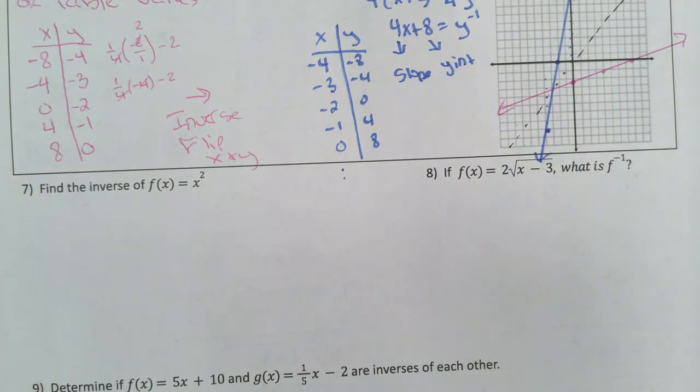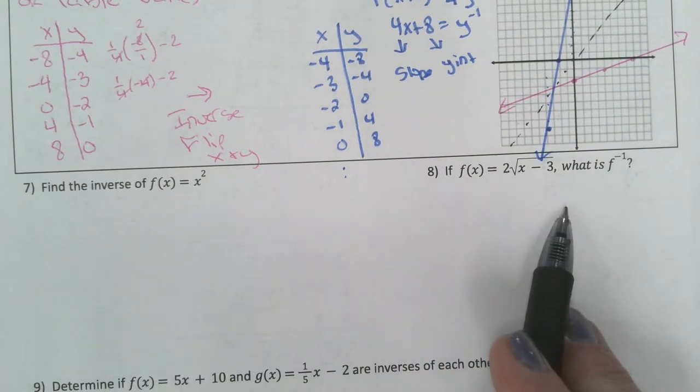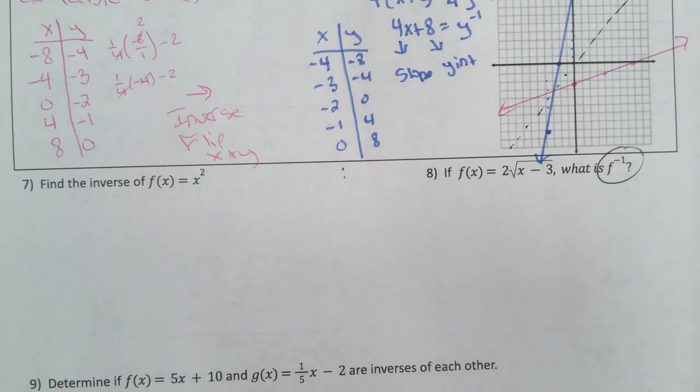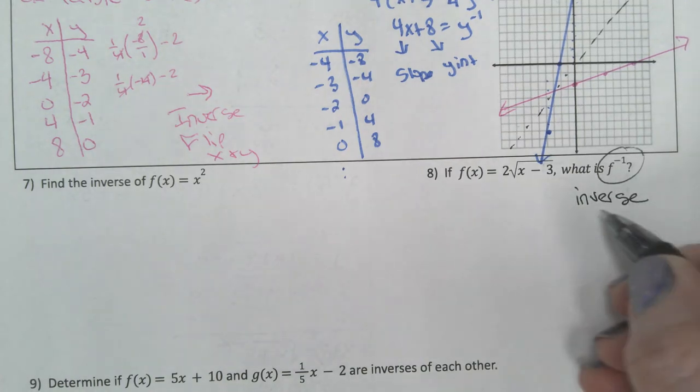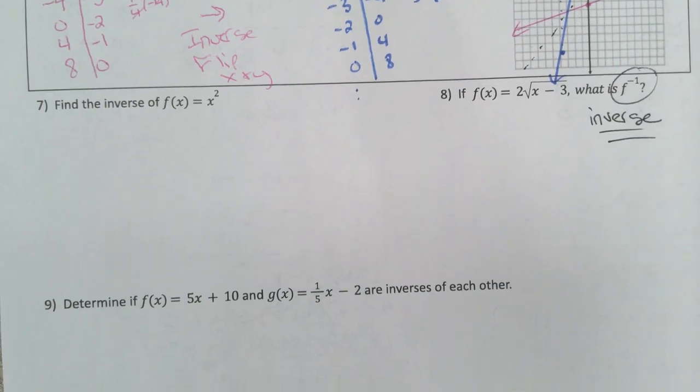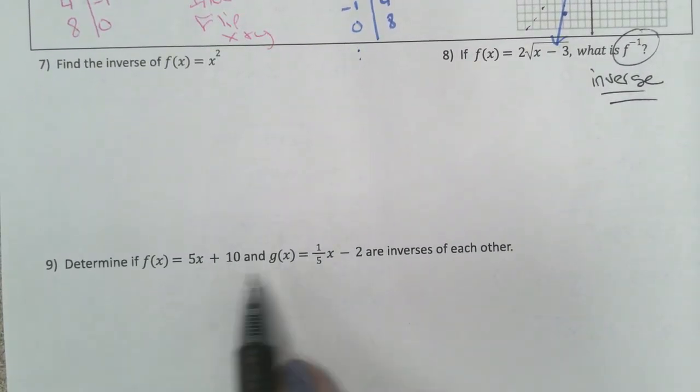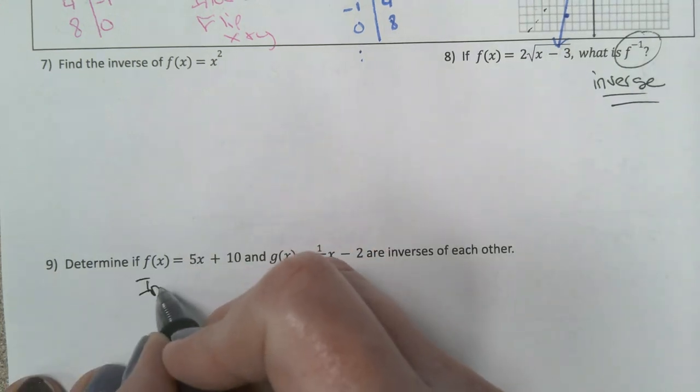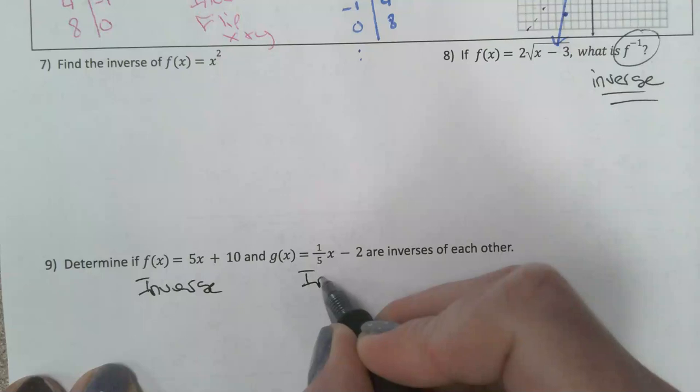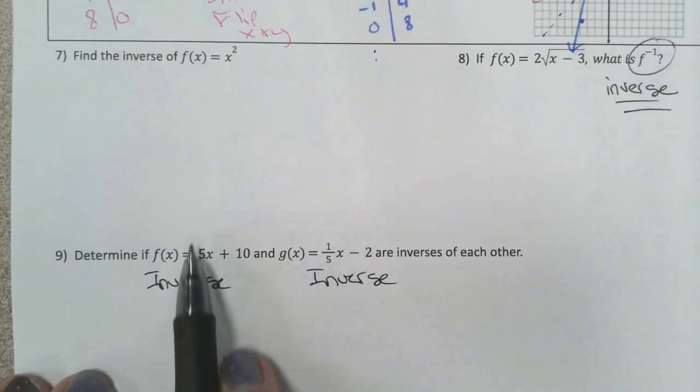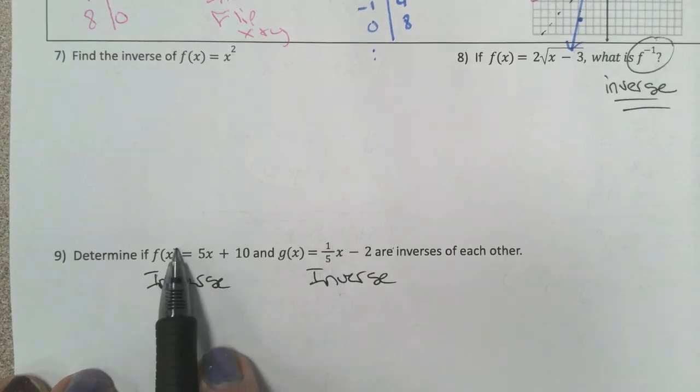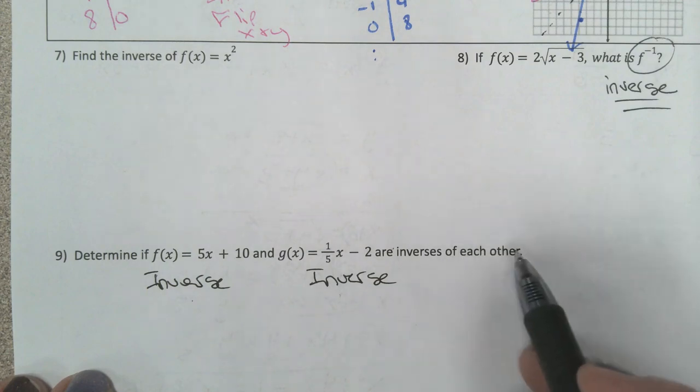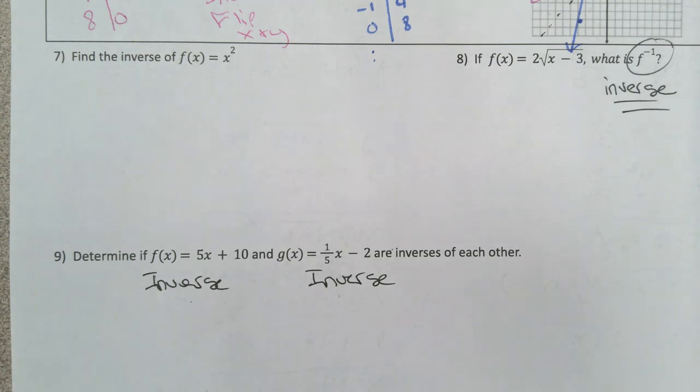Problems 7 and 8 are just more practice finding the inverse. When it writes it like that, what is f inverse, that is the inverse notation. That just says find the inverse of that function. Problem 9: determine if these two are inverses. You're going to find the inverse of this one and the inverse of this one. If you find the inverse of the f function you get g, and if you find the inverse of g you get f, then you would say yes they are inverses. If you get different functions, then no they are not. Check the notes for the answers. Thank you so much.